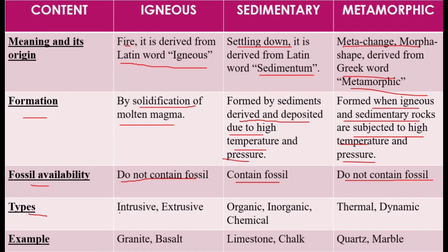Rock types and examples: Igneous rocks are divided into intrusive and extrusive types; examples are granite and basalt. Sedimentary rocks are divided into organic, inorganic, and chemical types; examples are limestone and chalk. Metamorphic rocks are divided into thermal and dynamic types; examples are quartz and marble.